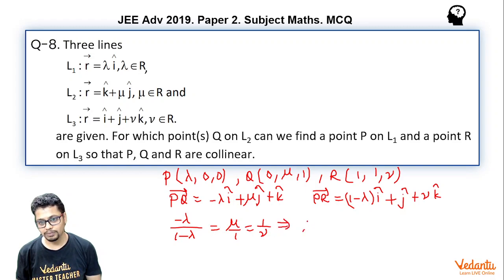So this essentially means mu is equal to 1 by nu. I can write this with adding one and subtracting one in numerator, so it becomes 1 minus 1 by 1 minus lambda, or you may write it as 1 plus 1 by lambda minus 1.